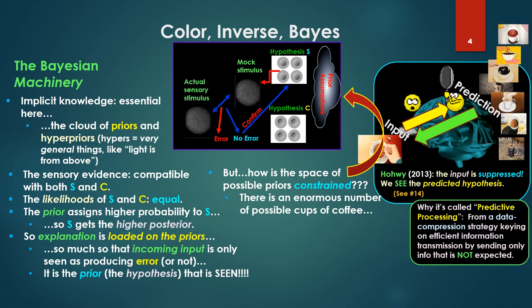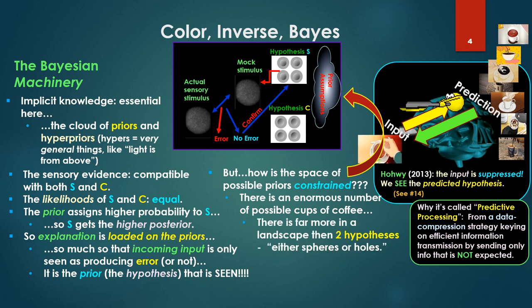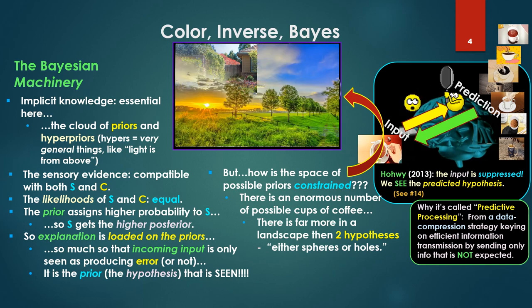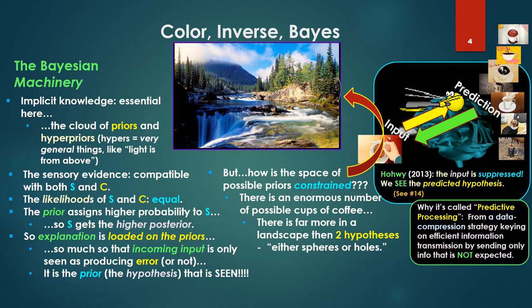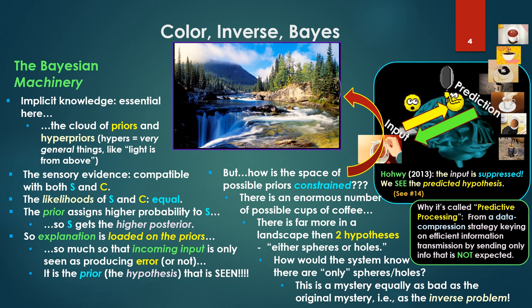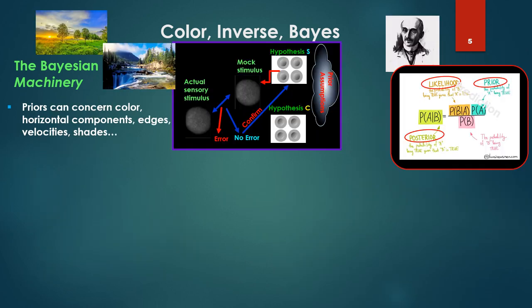But again, how is that space of possible priors constrained? Because that's where all explanation is loaded. There's an enormous number of possible cups of coffee that we'd have to pick. There's far more in a landscape than two hypotheses, either spheres or holes. How would the system know there are only spheres or holes or hemispheres, domes? This is a mystery. How it knows these hypotheses is equally as bad as the original mystery, that is, as the inverse problem.